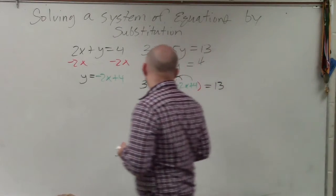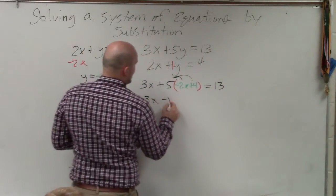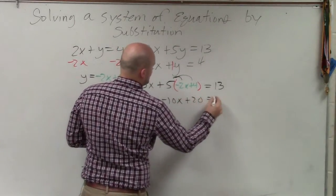Now I simplify and solve. Apply distributive property. 3x minus 10x plus 20 equals 13.